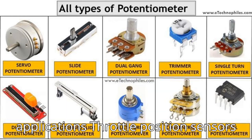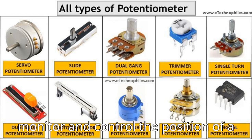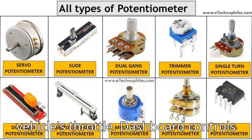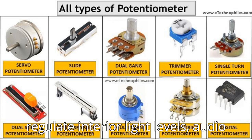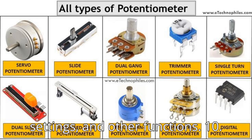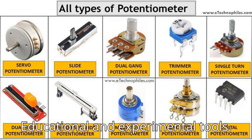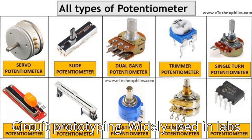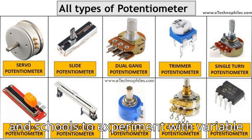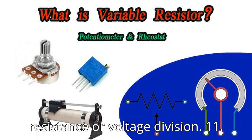Ninth, automotive applications: throttle position sensors monitor and control the position of a vehicle's throttle. Dashboard controls regulate interior light levels, audio settings, and other functions. Tenth, educational and experimental tools: circuit prototyping is widely used in labs and schools to experiment with variable resistance or voltage division.